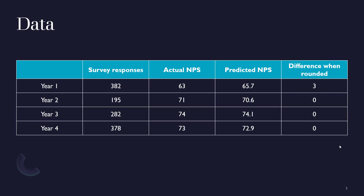Here's the data — I showed this already on my LinkedIn posts, though I have tweaked the algorithm since then. These are the four different years that I ran it, the number of responses we had, what the actual NPS came in as, and what the algorithm's predicted NPS was. The difference when we round it is pretty accurate in the last three years, slightly off in year one.